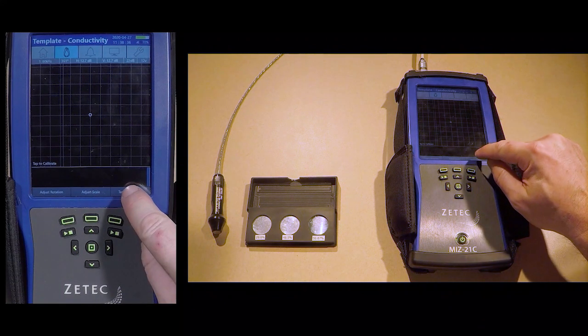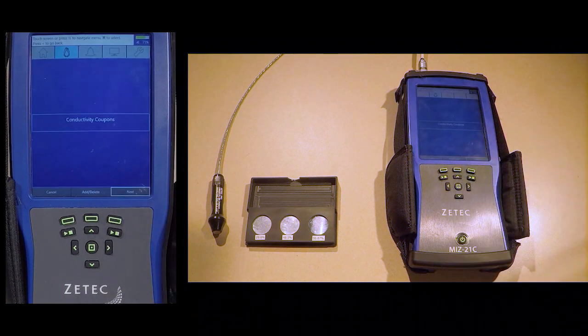Then use the Tap to Calibrate menu item in the lower right corner to move to the conductivity coupon entry screen.